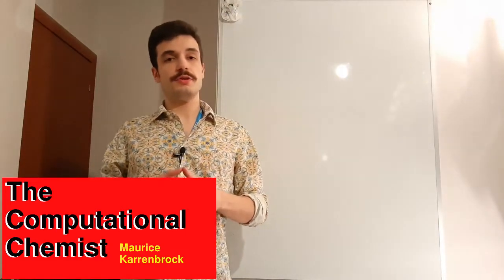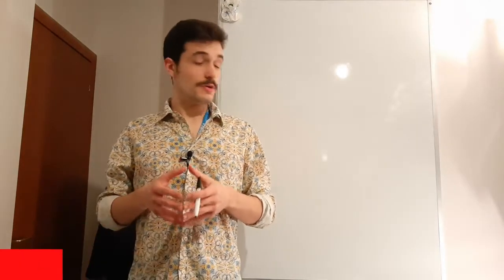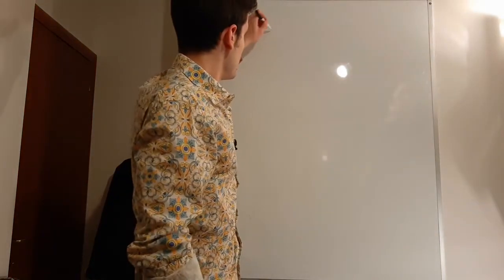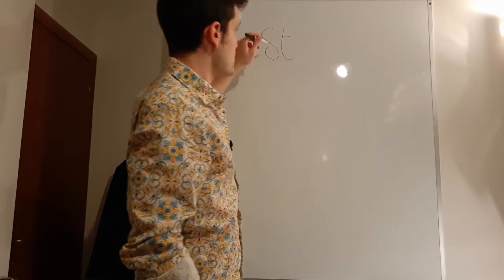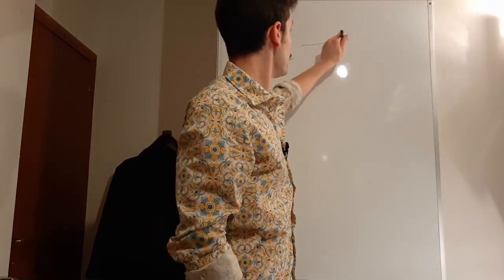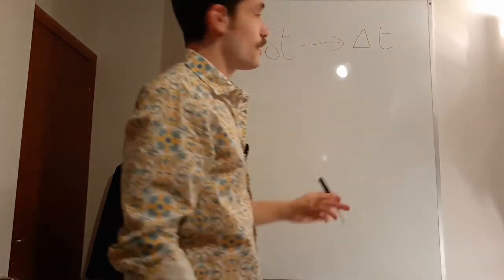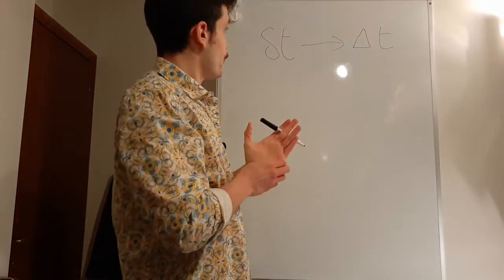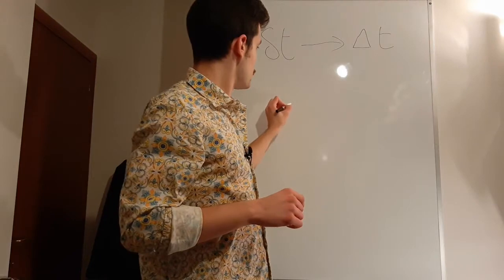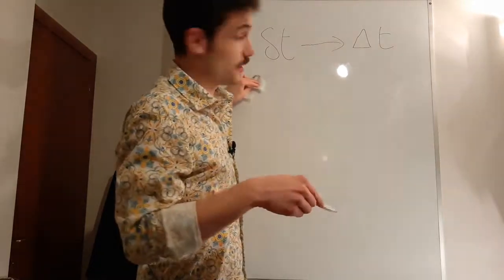Let's talk about how we are going to integrate the equations of motion inside a molecular dynamics program, because it's not obvious. The first thing we must consider is that usually when we study classical mechanics we work with infinitesimal time steps, but in reality, in a computer, we work with discrete time steps. This means that we will create some error at each step, because we are creating discrete steps that are not infinitesimal.